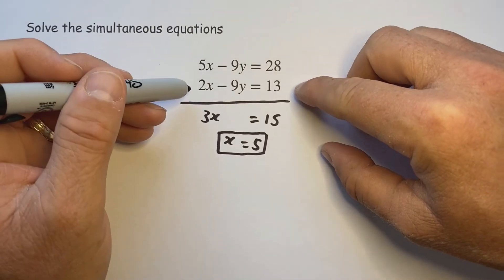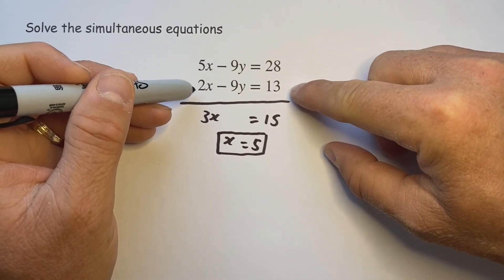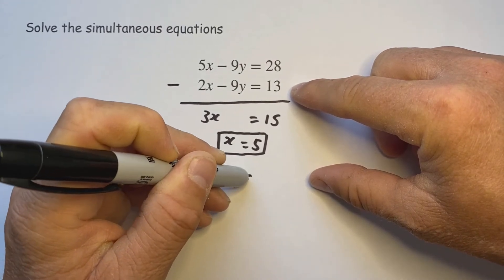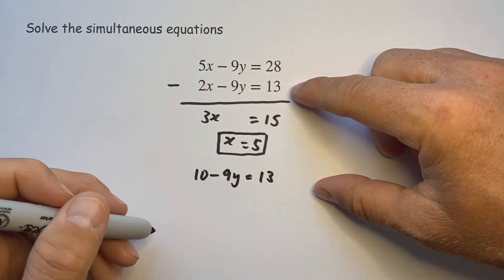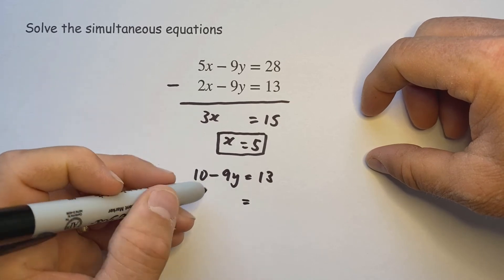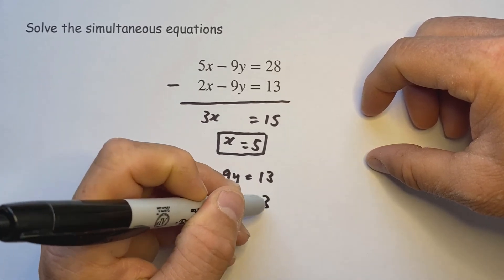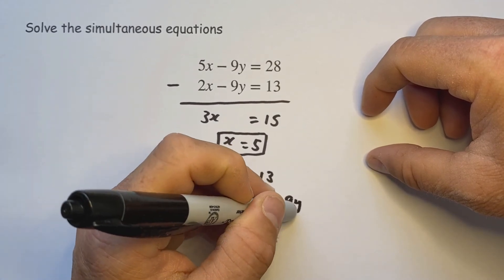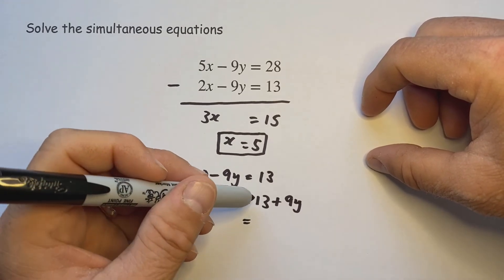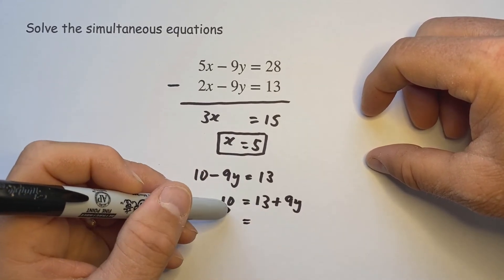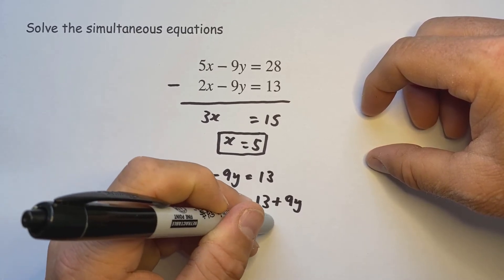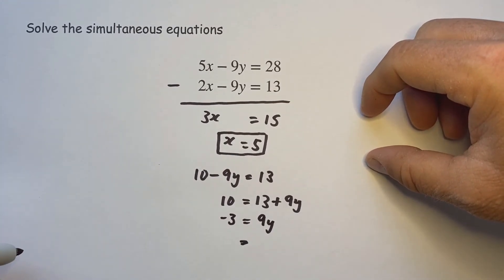Now no matter which one you put it into, I'm going to go into this one because it's smaller numbers again. 2 times 5, that's 10, take 9y equals 13. As I pointed out in the previous example I don't like solving with negative letters, so if I put that onto the other side becomes a plus 9y. Now a bit more challenging than the last question. If I move the 13 across becomes a take 13, 10 take 13 is minus 3. So 9y has to equal minus 3.